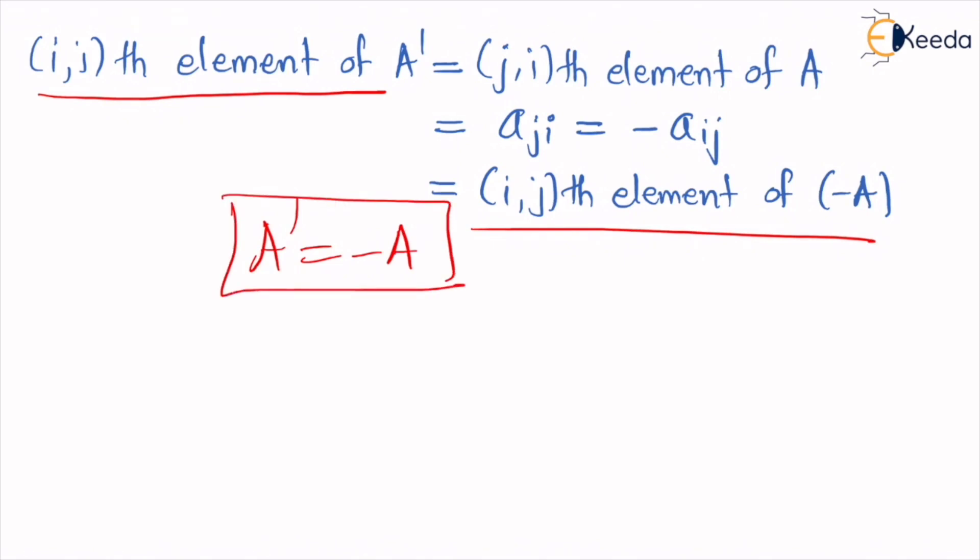So we got that the ijth element of A dash is equal to the ijth element of minus A, and that is why we can say that A dash is equal to minus A. Here we have proved the given result. Now we will check conversely. If A dash is equal to minus A, then since A dash is a square matrix, A also has to be a square matrix. From this we will derive that A is a skew symmetric matrix.